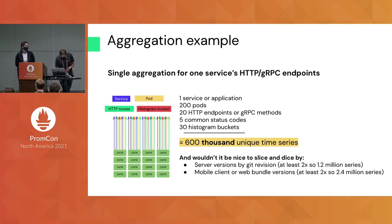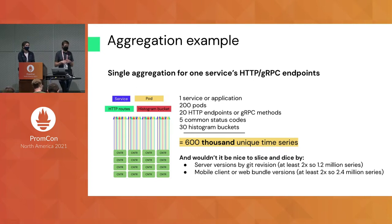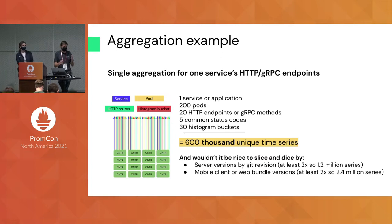In this example, we're looking at a single microservice with 200 pods, 20 endpoints — HTTP or gRPC — measuring latency via different status codes at a precision defined by a spread of 30 histogram buckets. That single metric across a few endpoints — like graphing the P99 of all endpoints on one Grafana panel — is going to be operating on 600,000 time series.